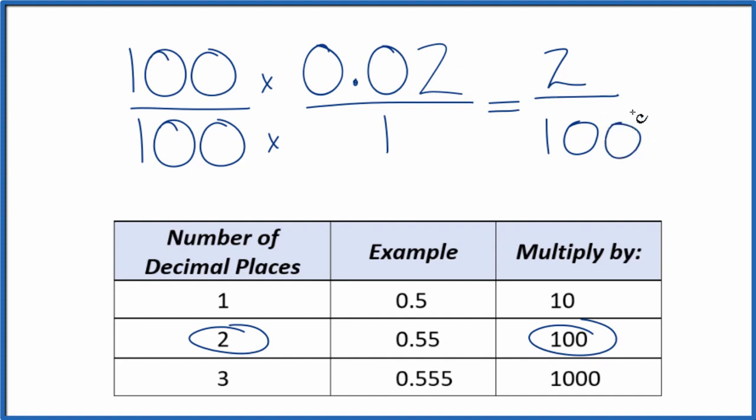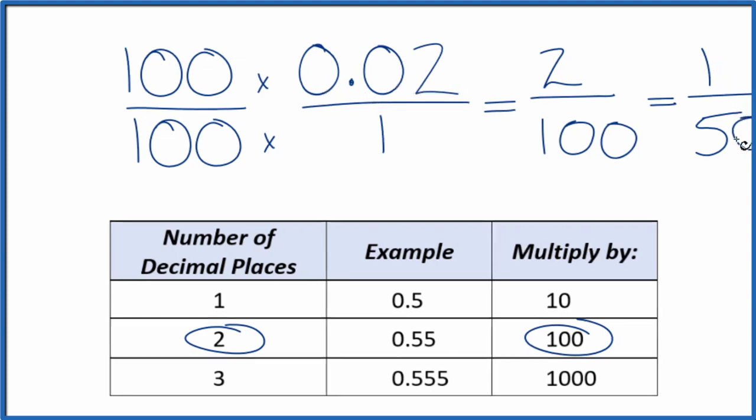So now we have a fraction with whole numbers. If you divide 2 into 2, you get 1. And then if you divide 100 by 2, you get 50. So we've converted the decimal 0.02 to a fraction, 1/50.